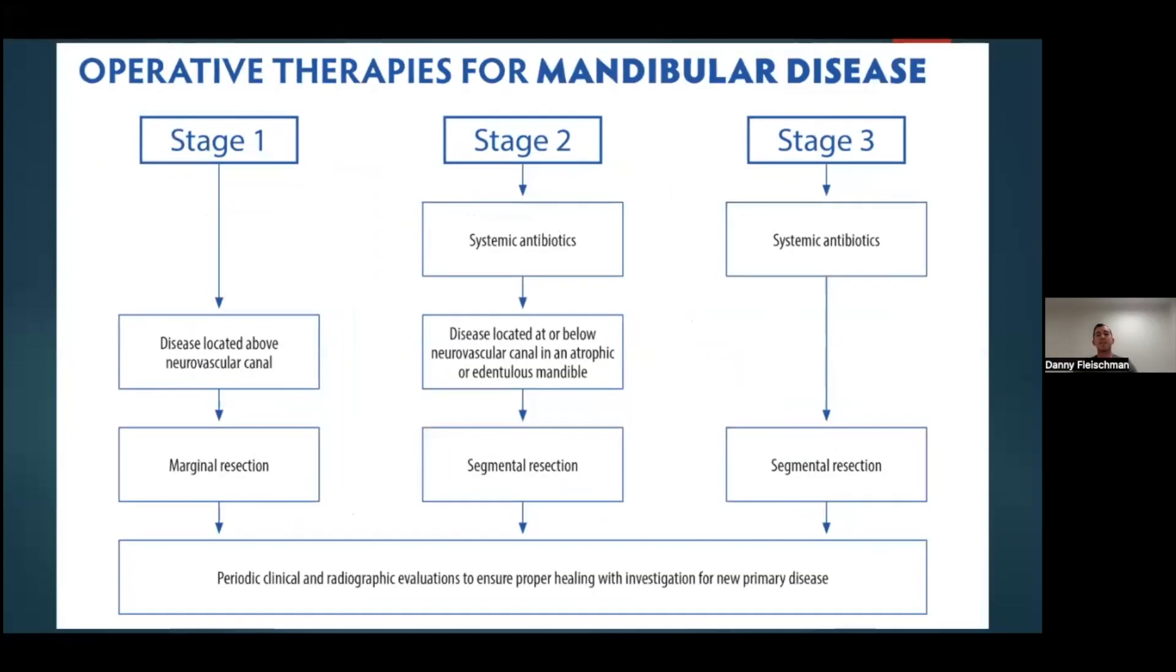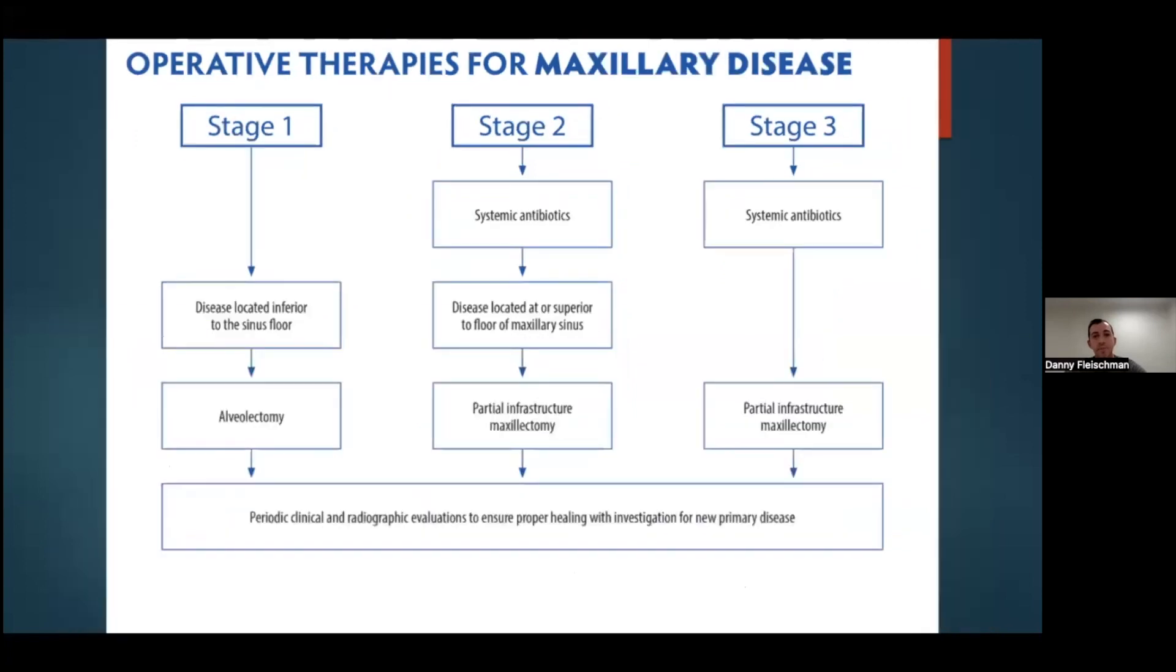With operative therapies, they're different for both maxilla and mandible. And when you talk about mandibular disease, operative therapy could be a marginal resection or a segmental resection or actually a flap to reconstruct the area. These are obviously pretty major surgeries, but sometimes they're needed if patients have pathologic fractures, extraoral draining fistulas, and really no regression of the disease. For maxillary disease, you may see alveolectomies and partial maxillectomies up to the sinus floor if disease keeps progressing and does not resolve.